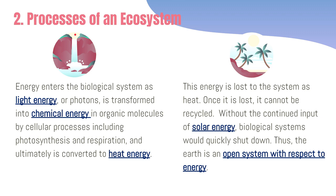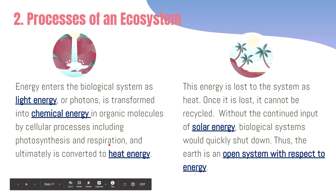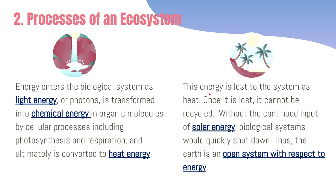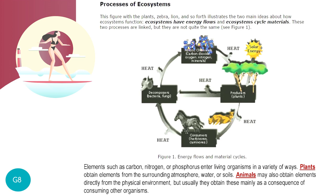The next principle is the processes of an ecosystem. Energy enters the biological system in the form of light energy from the sun, and through photosynthesis that light energy is transformed into chemical energy in organic molecules. It is then harvested to become ATP — adenosine triphosphate — in cellular respiration, and ultimately converted to heat energy as a byproduct. Once heat energy is released, it is lost to the system and cannot be recycled. Because of this, with respect to energy, the earth or an ecosystem is considered an open system.